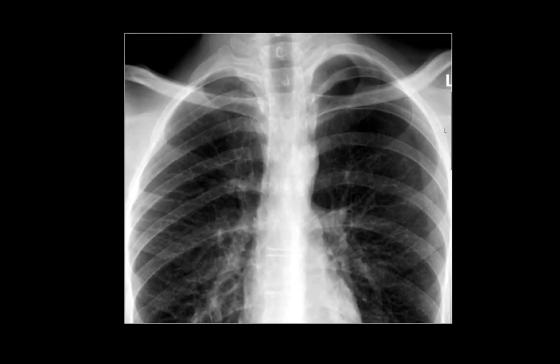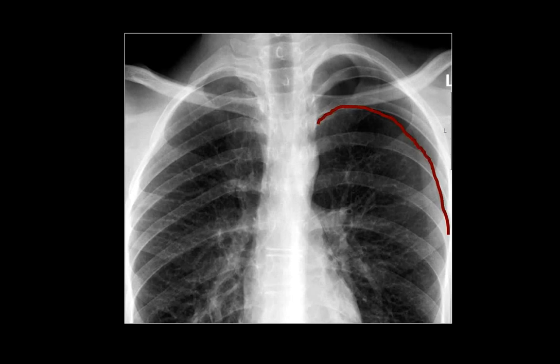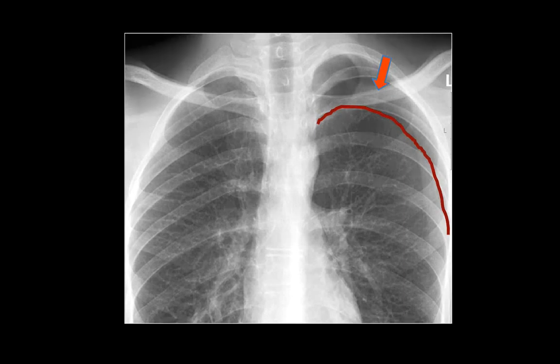If you look at the right lung, you'll notice that the lung markings reach all the way to the periphery — to the bones. However, that's not the case on the left side. The first thing you notice is a smooth thin line that displaces the lung markings inwards, which is why you don't see any lung markings at the lung apex. Both of these signs — the presence of a visceral pleural line and the absence of lung markings beyond that line — are classic signs of a pneumothorax.